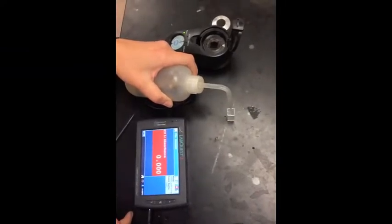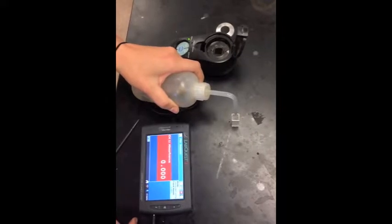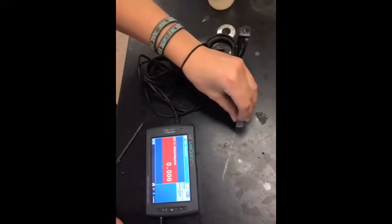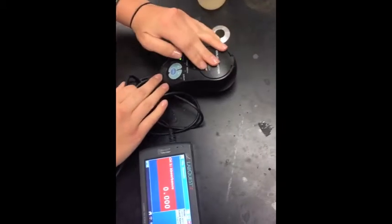For the last cuvette, fill it with three-fourths of distilled water, just like the other one. Then place the cap on it. When you put the cuvette into the colorimeter, make sure that it is facing towards the line.